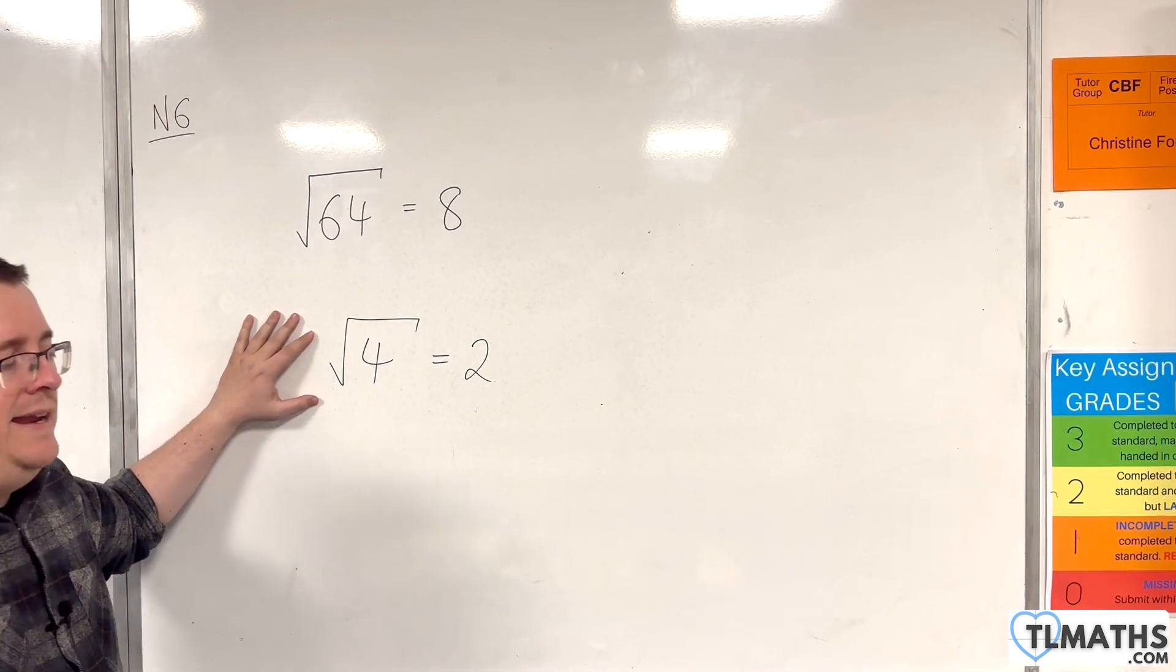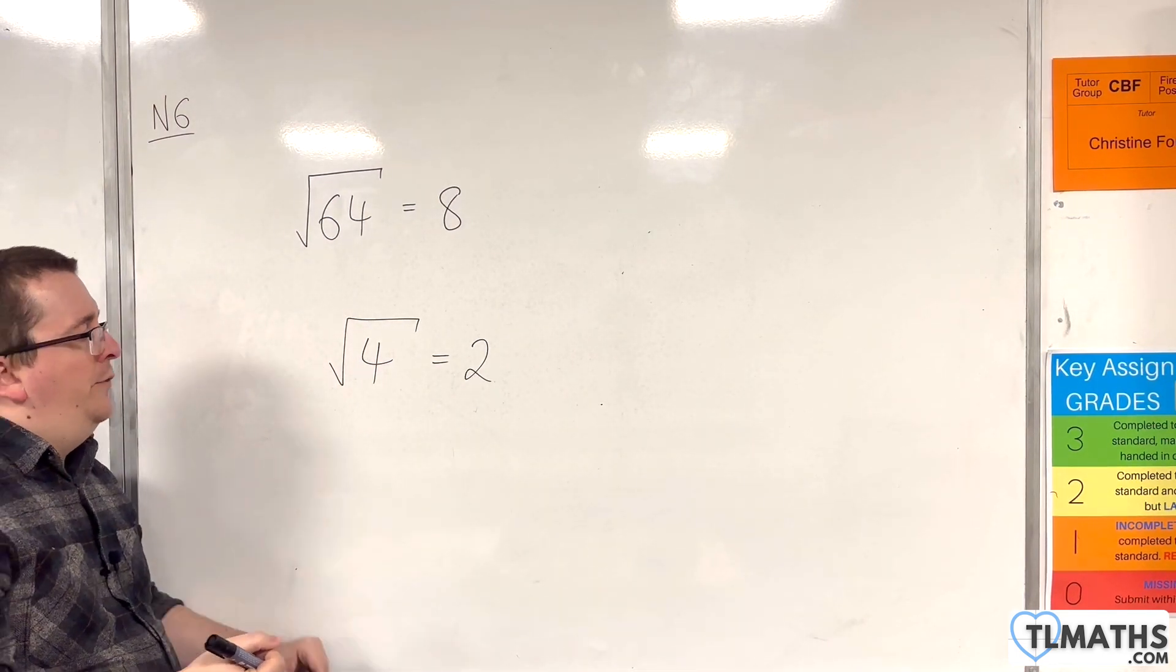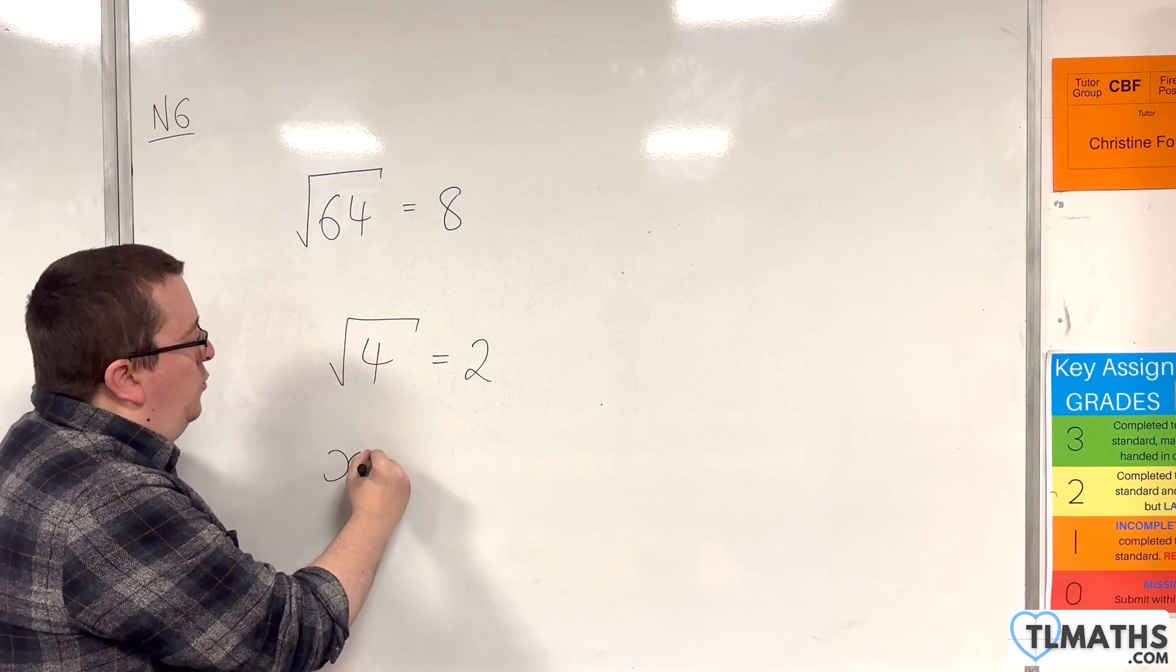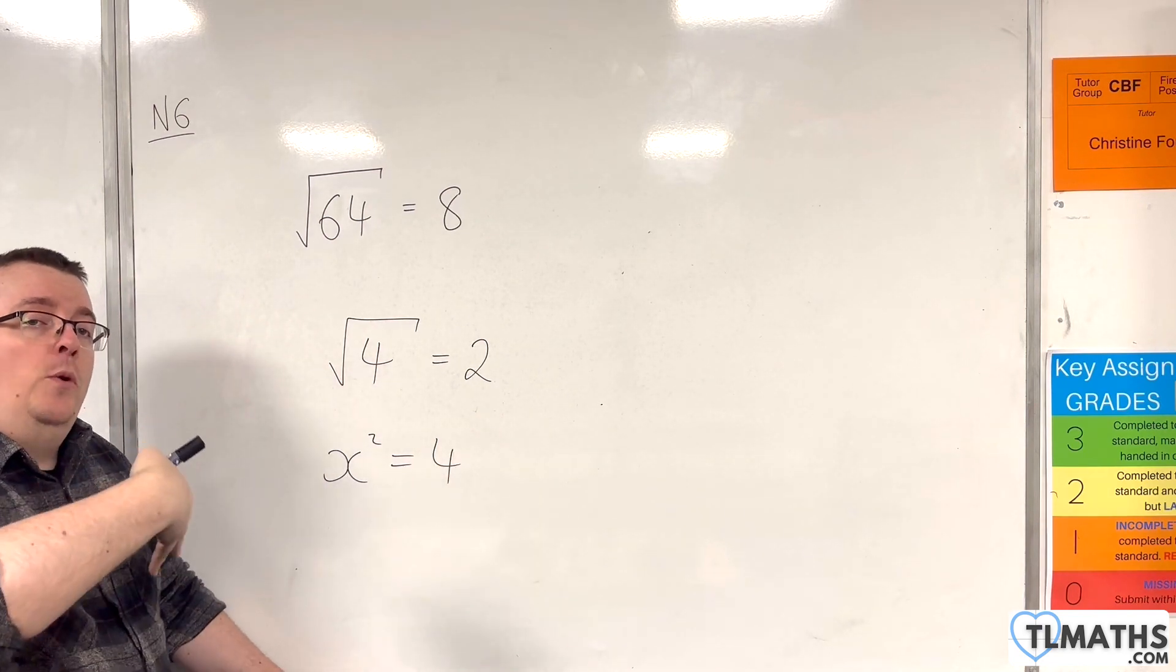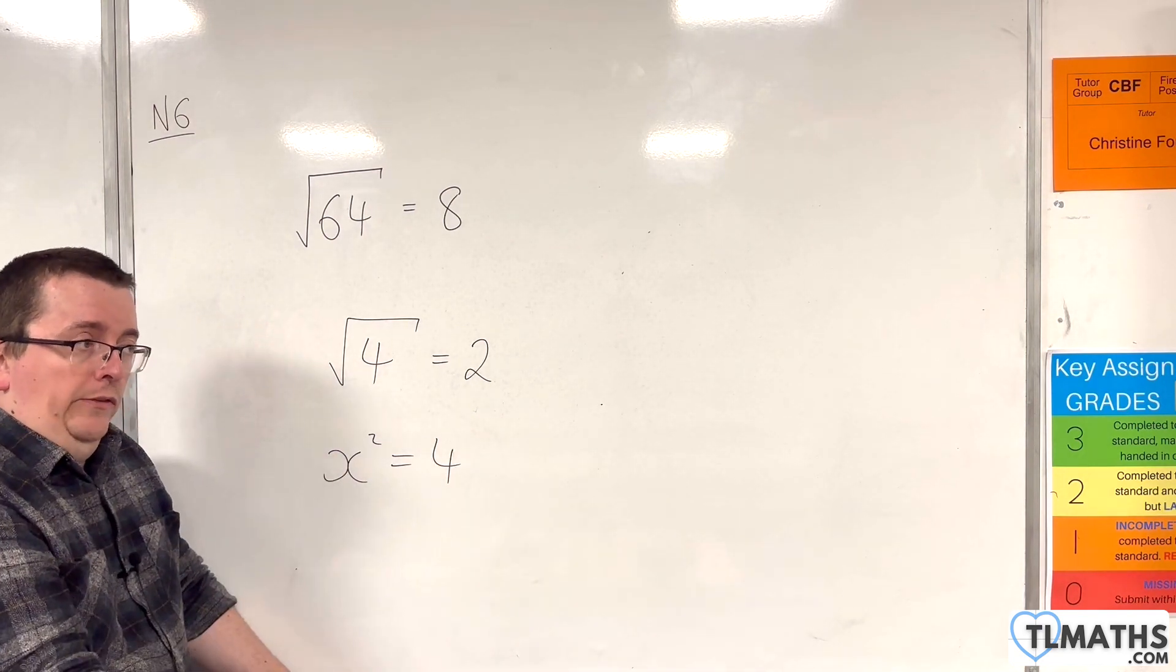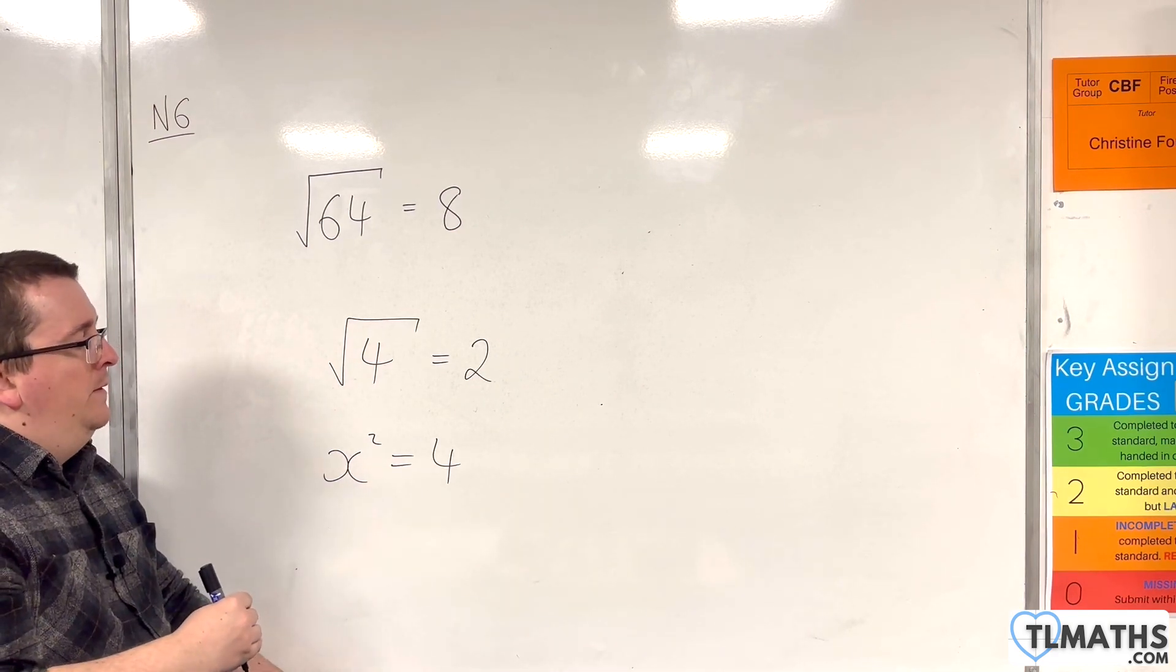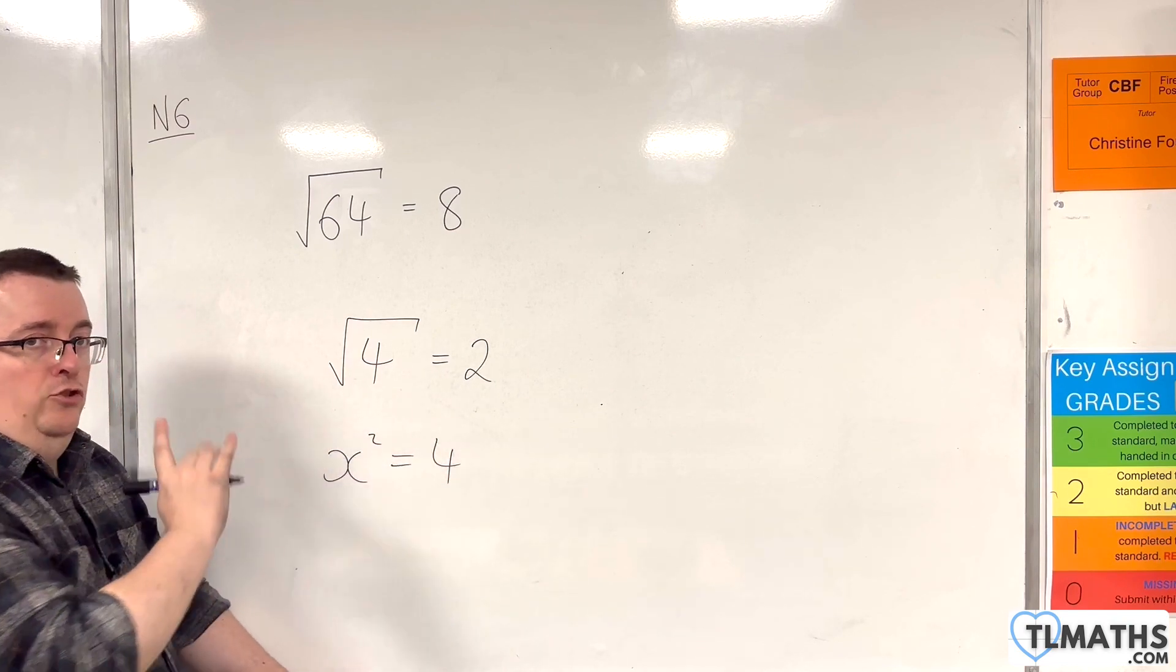The reason why negative 2 comes up is because, as we will see in a few videos' time, we'll be looking at equations like x squared equals 4. That is an equation with two solutions. And the two solutions are 2 and minus 2. So this has two solutions, but the square root of 4 is just 2.